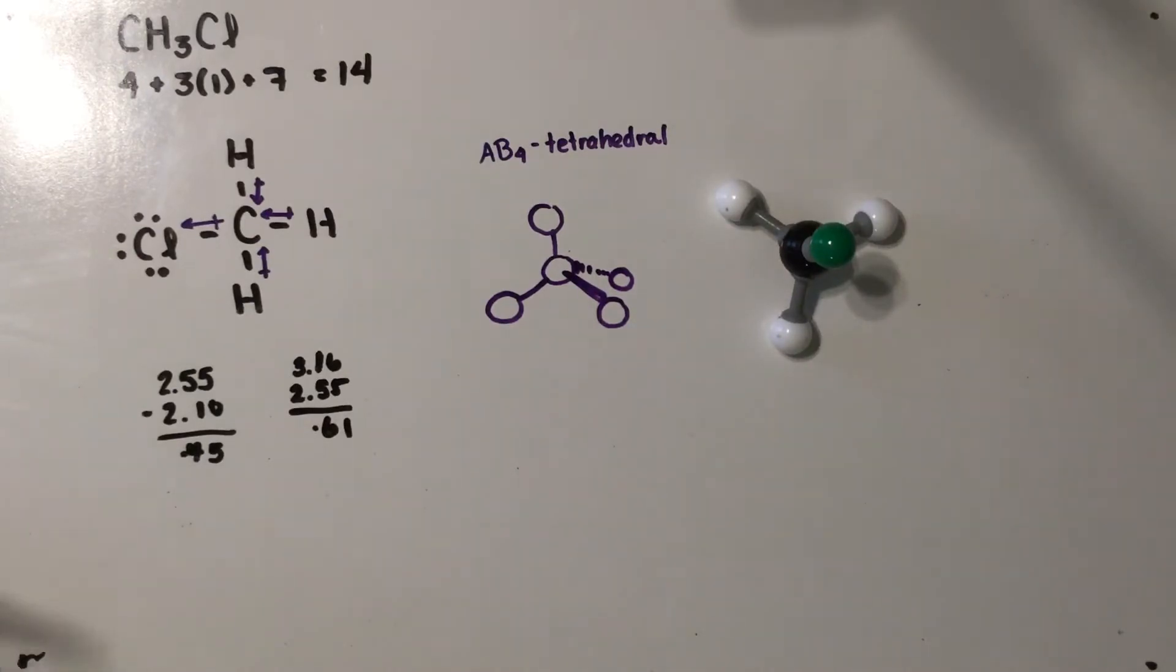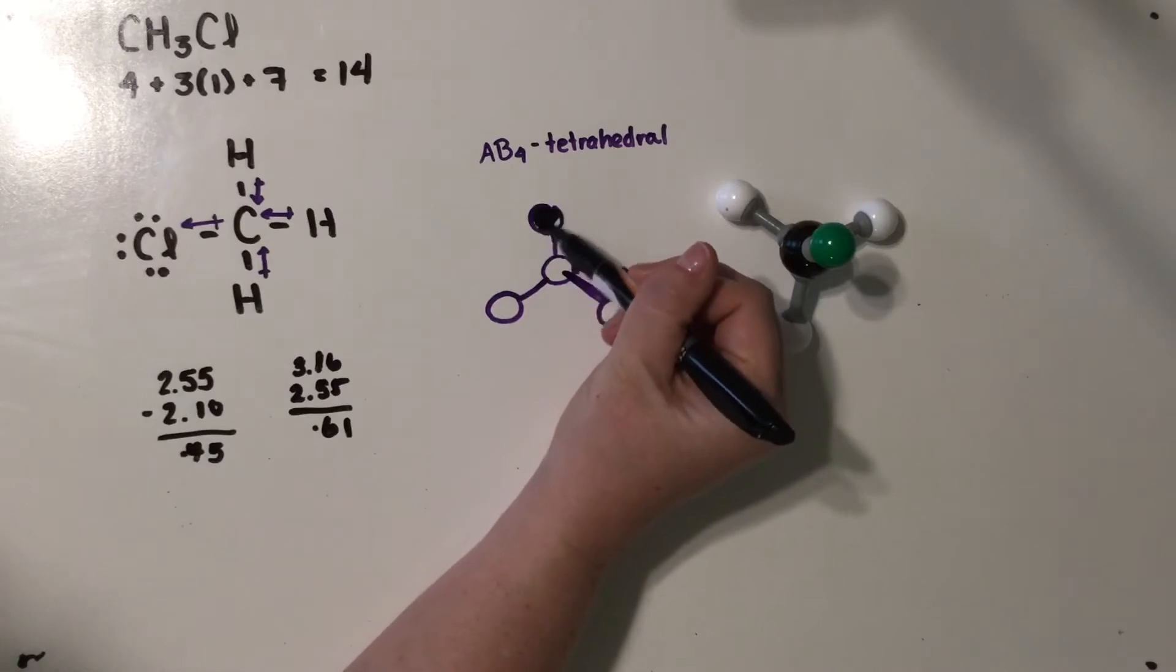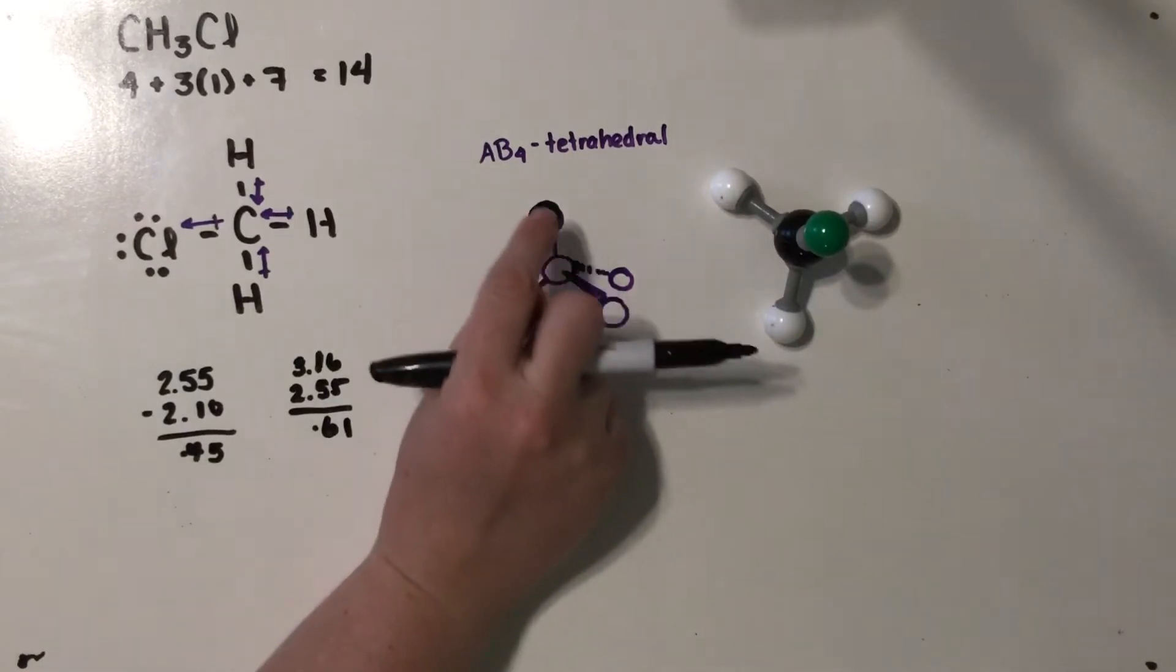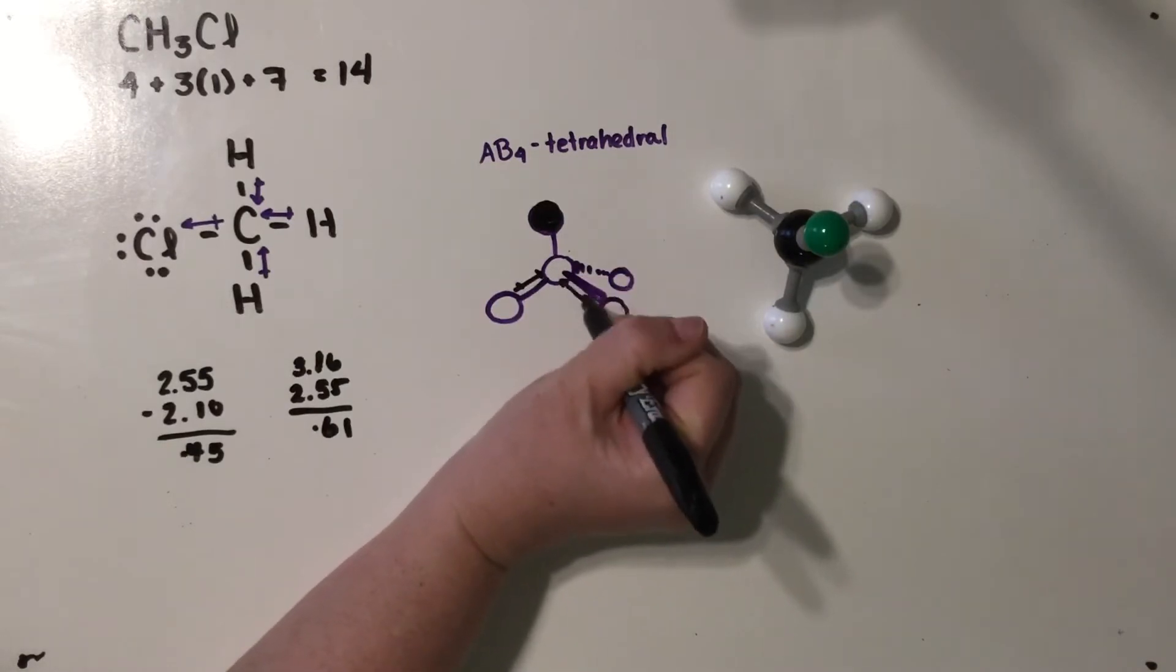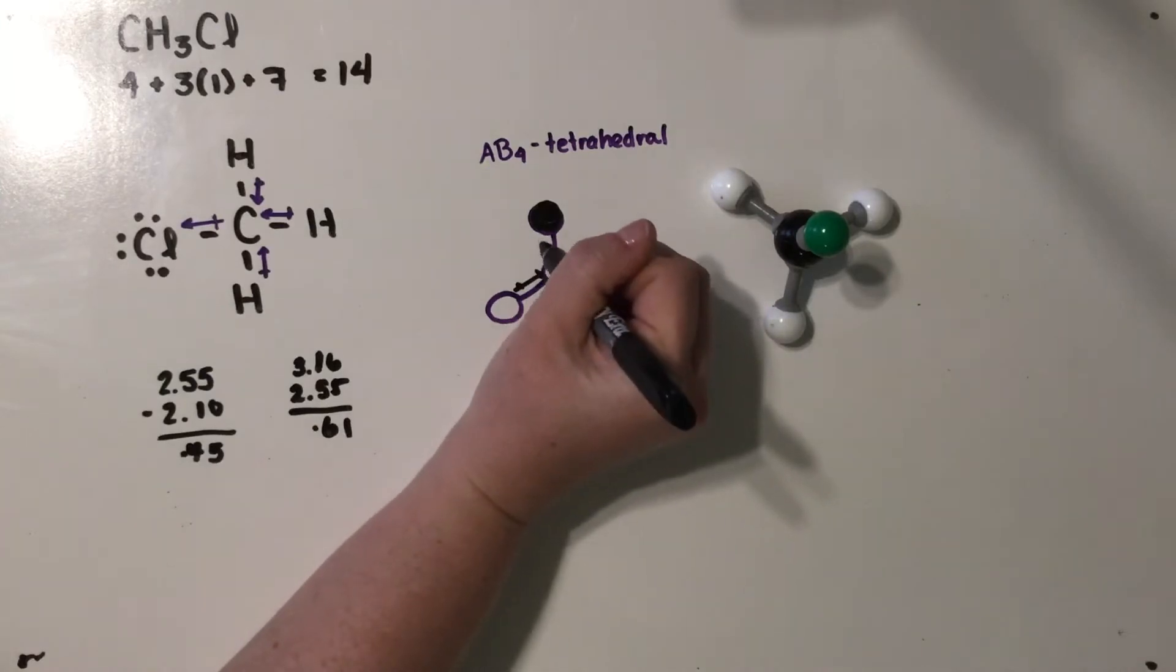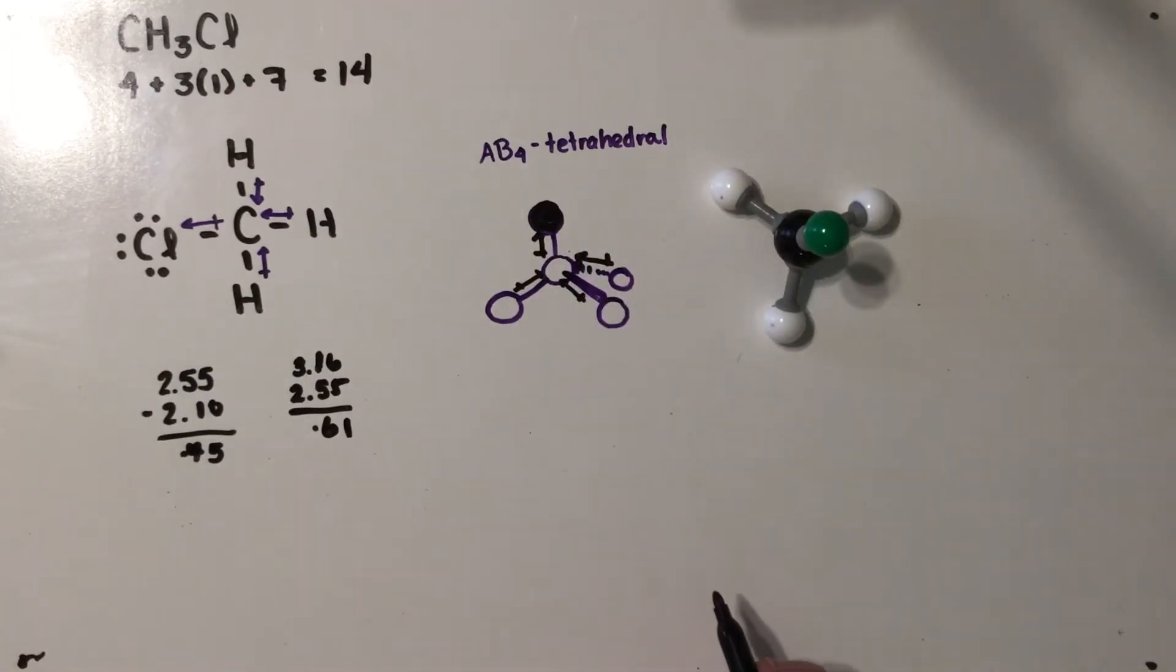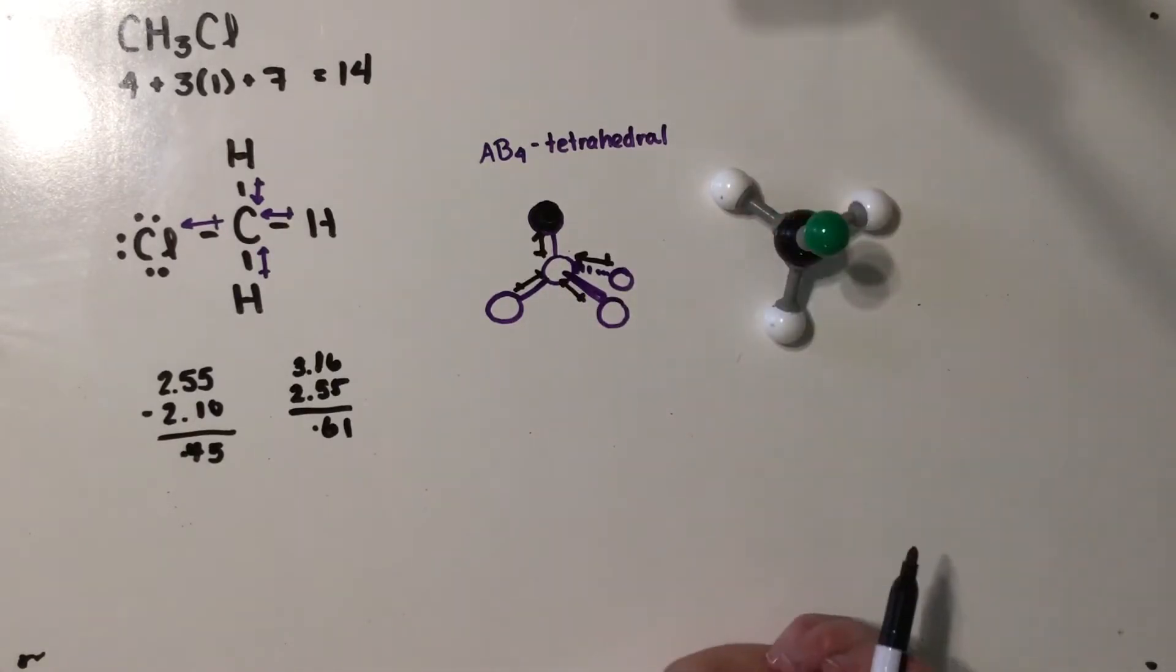And please don't judge me for having random molecular model kits at my house. I'm going to color one of these in just so we remember that one of them is different than the other three bonded atoms. This would be our chlorine, these would be our hydrogens. So these dipoles would be pointing in toward the center atom. This one is pointing away from the center atom, which means overall the electrons kind of be pushing up toward the top of this guy.